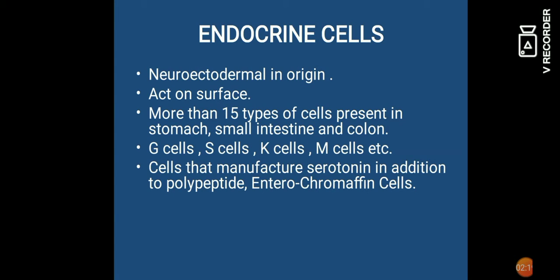अब endocrine cells हैं क्या? इनकी उत्पत्ति neuroectodermal होती है। यह surface पर प्रभाव डालते हैं। Stomach, small intestine और colon में 15 से ज़्यादा प्रकार की cells होती हैं, जैसे G-cell, S-cell, K-cell, M-cell आदि। Cells that manufacture serotonin in addition to polypeptide — enterochromaffin cells — यह सब हैं endocrine cells।